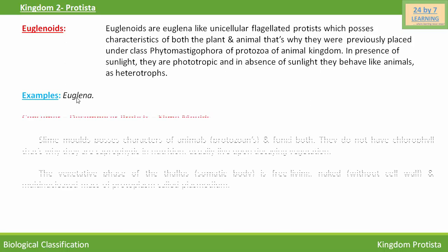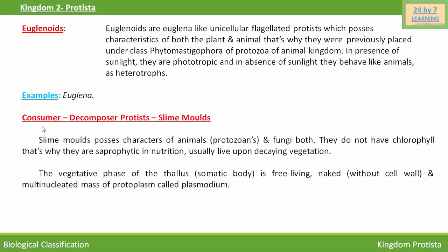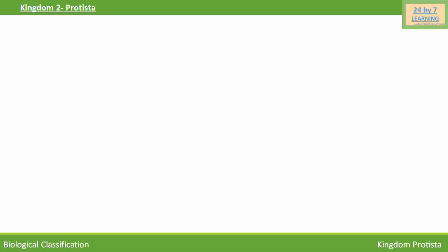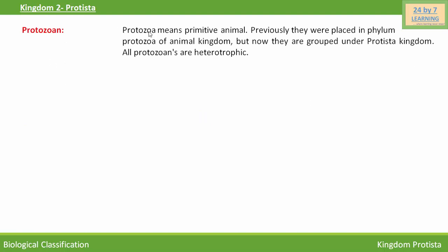Next are consumer protists or slime molds. Slime molds possess characteristics of protozoans as well as fungi. They do not have chlorophyll, so they are saprophytic in nature and usually live upon decaying vegetation. The vegetative phase of the thallus is a free-living, naked, multi-nucleated mass of protoplasm called plasmodium — meaning the somatic body is without a cell wall. Their examples are Physarum and Trichia.